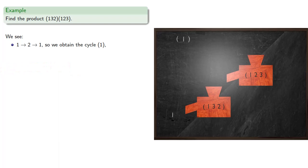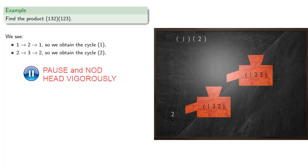Now remember, everything has to go somewhere, and so our cycles permute 2. So let's see where 2 goes. 2 gets sent to 3, and 3 gets sent to 2, and so we obtain the cycle (2). 3 gets sent to 1, which gets sent to 3, so we obtain the cycle (3).